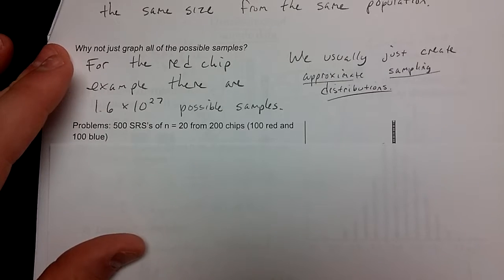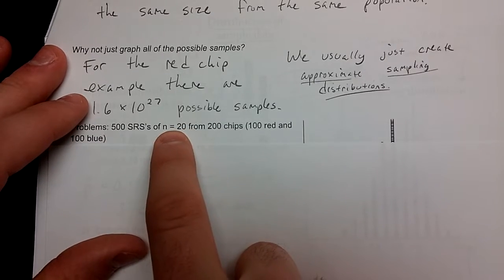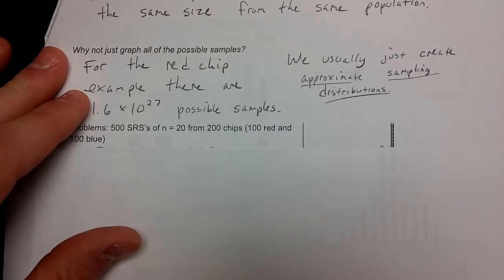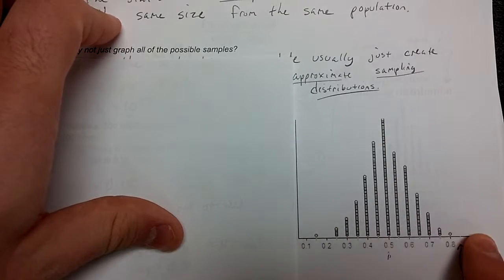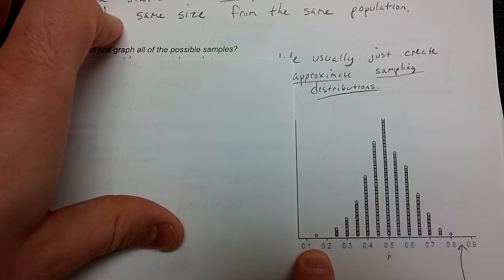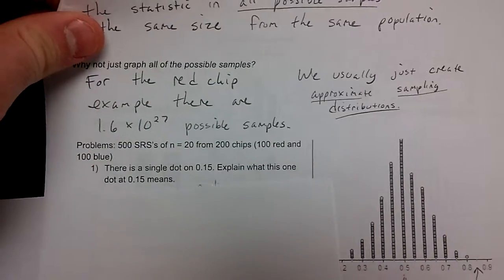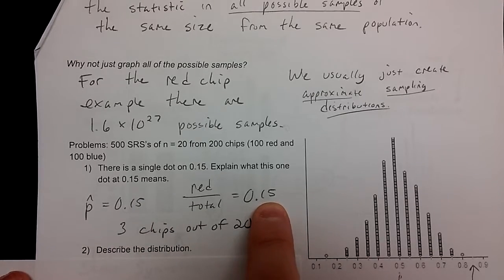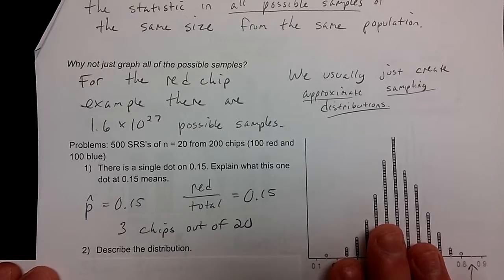All right. So if we use computer software, we can produce 500 simple random samples of the same situation. So I do more random sampling of the same size, n equals 20 from the same bag, 200 chips, 100 red, and 100 blue. I'm still taking p hat every time. What's the proportion of red chips every sample? This is what a 500 sample distribution looks like. About the same shape, but you'll notice it's more symmetric the more times we do it. And we have some more extreme numbers here, but they're very, very unlikely. So a p hat of 0.15 happened one time, this one dot out of 500. What does this mean in terms of the situation? Well, that means 15% of the sample was red. That's three chips out of 20. That's a very unlikely event happening in this entire distribution.